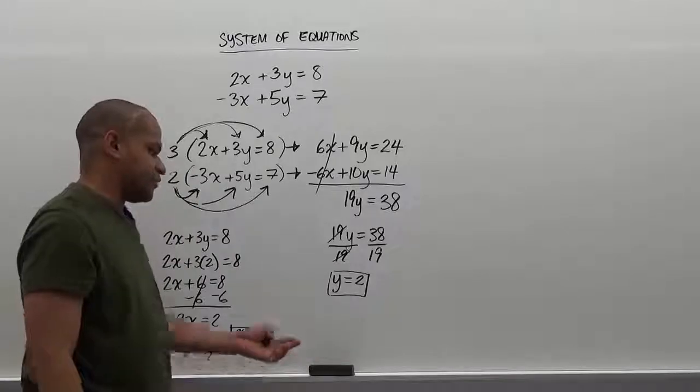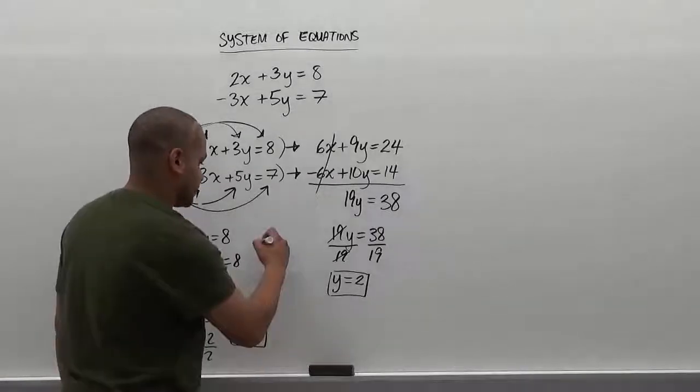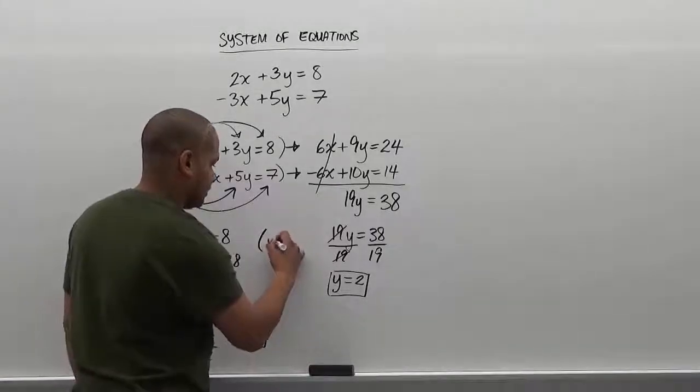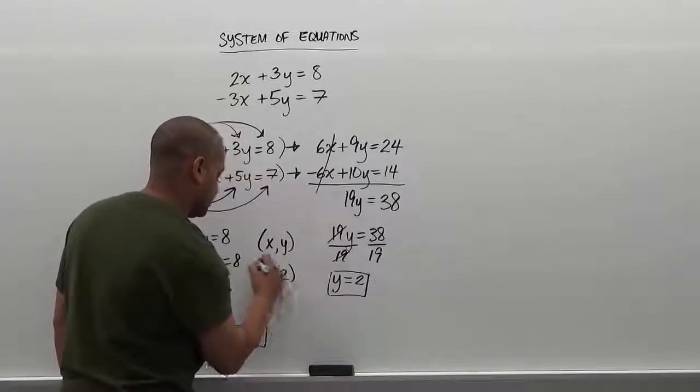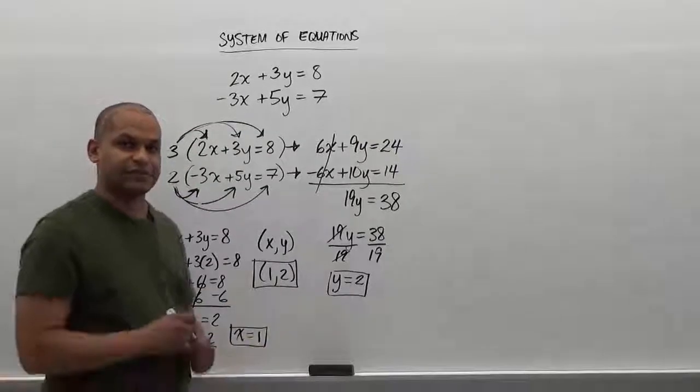And so our x value is 1 and our y value is 2, so the solution for this problem is going to be in terms of x and y, and we have 1 comma 2 as a coordinate. And here's our solution for the system.